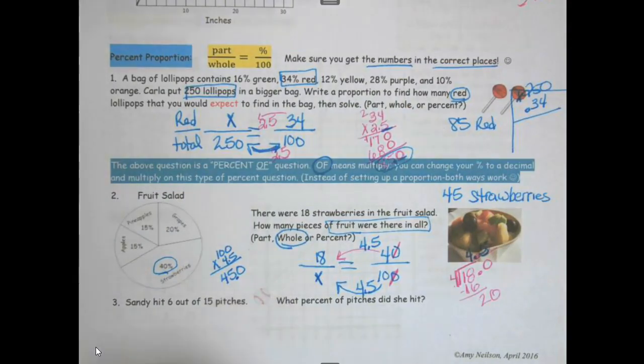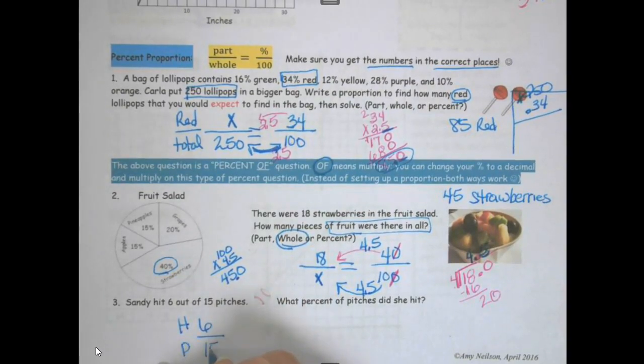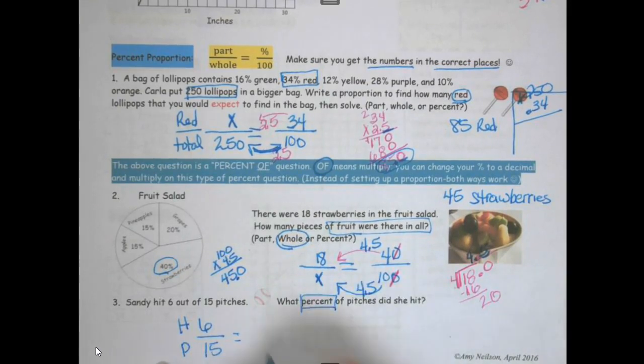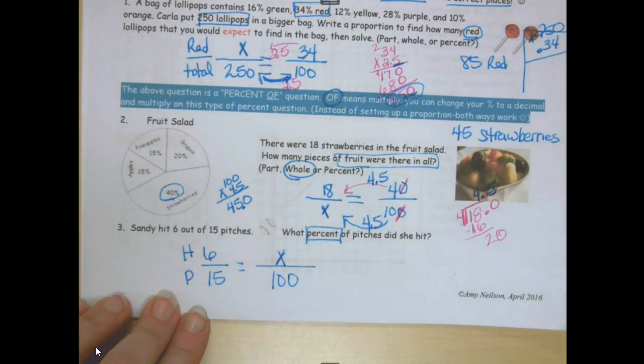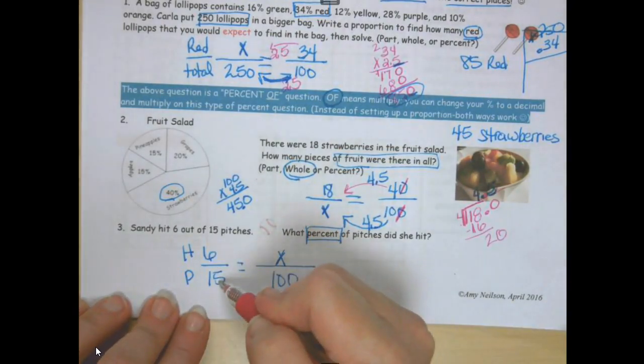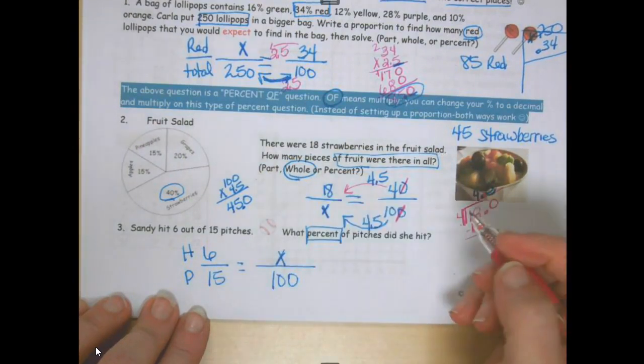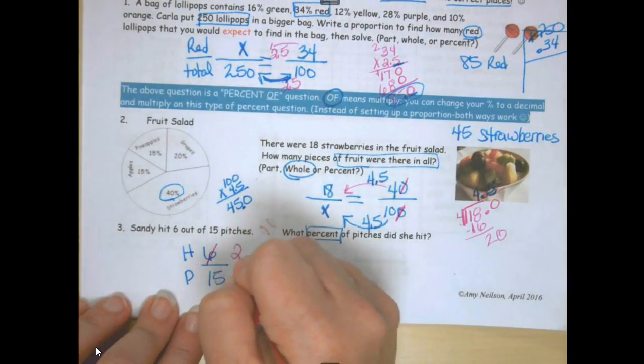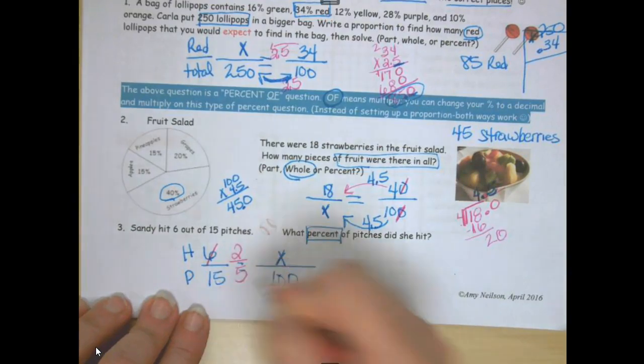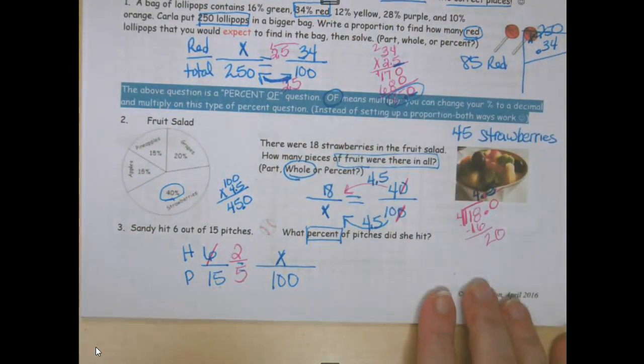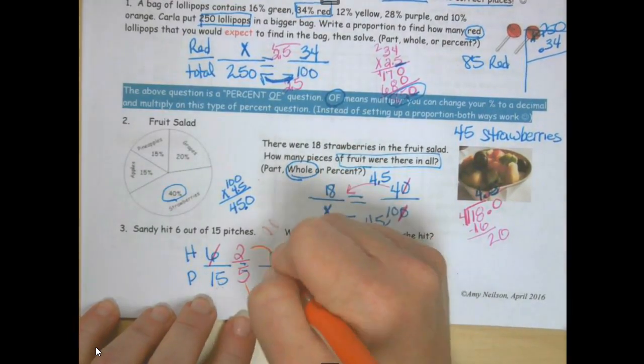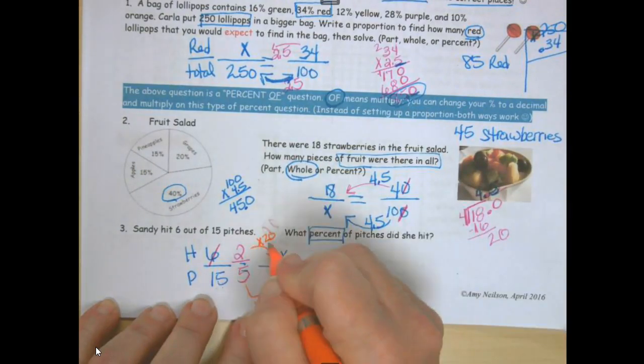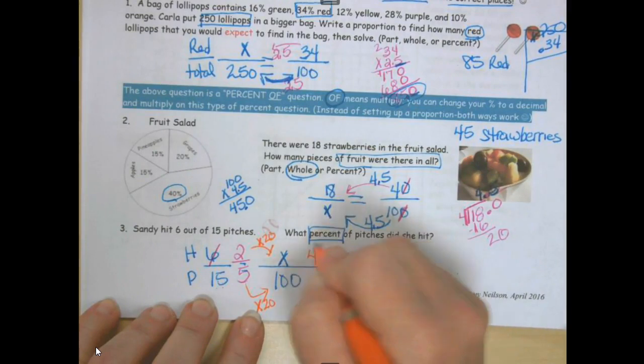Sandy hit 6 out of 15 pitches. This is what she hit out of 15. What percent? So we are looking for percent, this is what I do not know. And my bottom number is going to be 100. What can I divide 6 and 15 by? 3. 6 divided by 3 is 2. 15 divided by 3 is 5. This makes it a little bit easier. How can I go from 5 to 100? Times 20. So 2 times 20 is 40. So this is 40%.